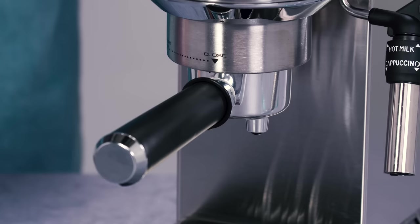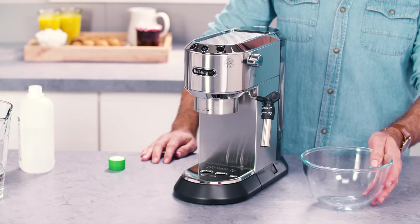Press the on-off button. Make sure the filter holder is not attached and position a container under the cappuccino maker.